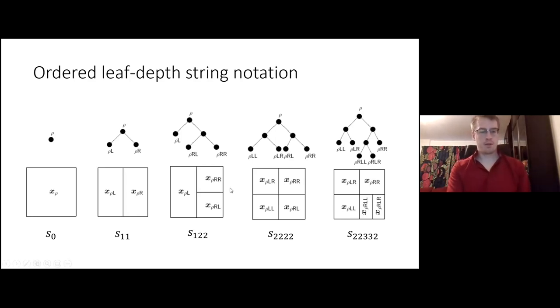I will introduce this ordered leaf depth string notation. It's a good way to explain the depth. For the root node, it's always depth zero. So order leaf depth string notation, you take the leaf nodes from left to right and you write the depth of them. Here there's only one node. It's depth zero because you need zero splits to reach this node. In this one, you have two leaf nodes, row L and row R. Both are depth one because one split is required. You can also look at it like there is one line to reach from the root node.